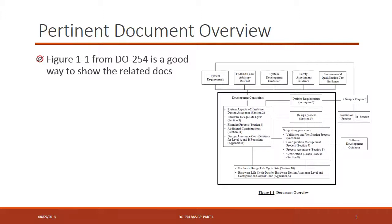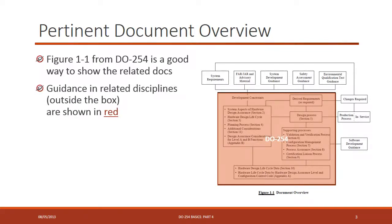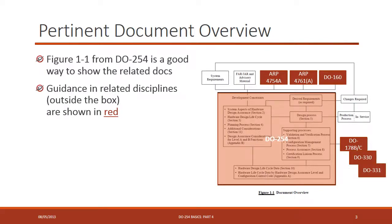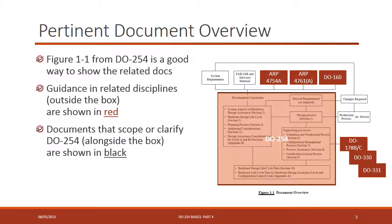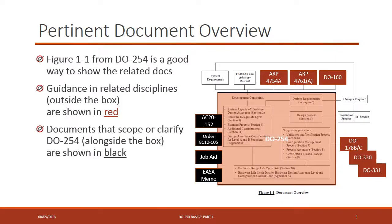The best way to look at this is through Figure 1-1 from DO-254, which was introduced in the first part of this series. The bold black box highlights the boundary of DO-254. Documents shown in red are related disciplines — for example, ARP 4754A, ARP 4761, DO-160, DO-178B/C, and companion documents DO-330 and DO-331. Then there are documents that scope, bound, clarify, or modify DO-254, including AC 20-152, Order 8110.105, the Job Aid, and the EASA memo.